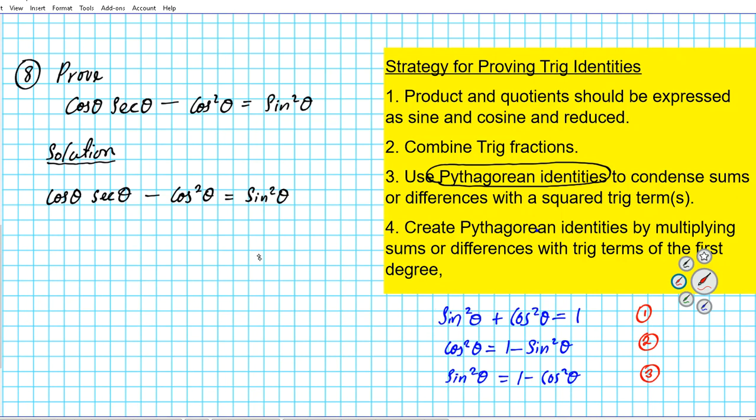Okay, so now we have minus cosine squared theta. Now, which of these identities has something minus cosine squared theta? Is it the first form, second form, or the third form? We can clearly see that the third form is applicable here because we have minus cosine squared theta. We have one minus cosine squared theta.